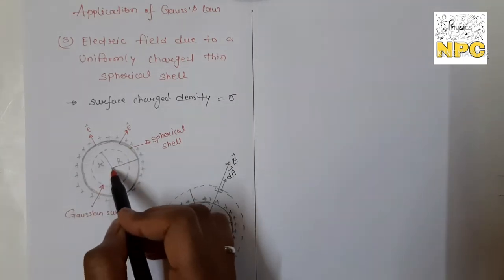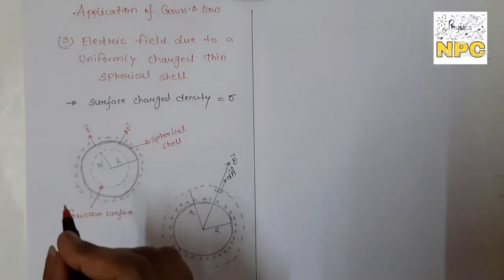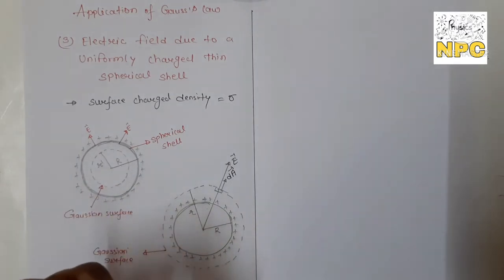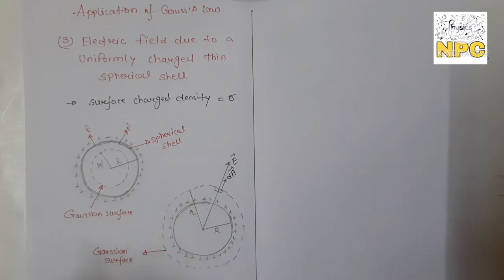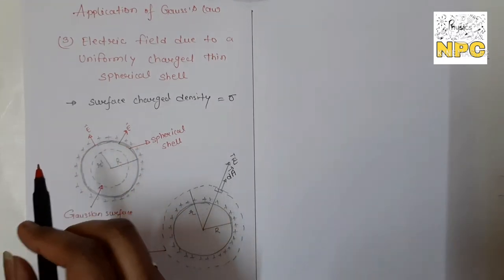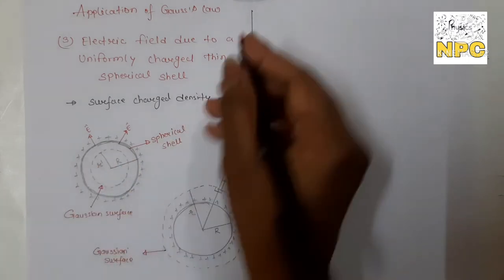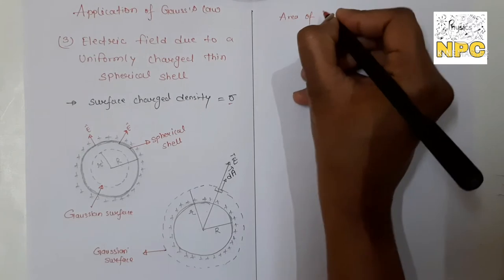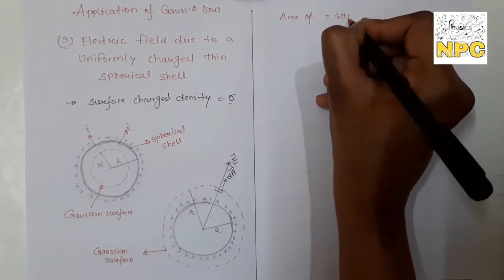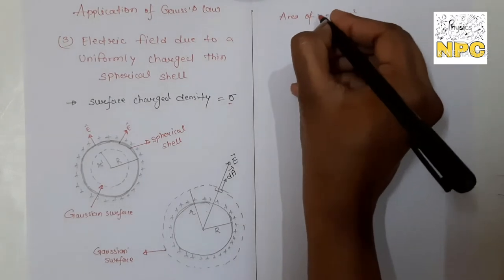The radius of this spherical shell is capital R. Now, if you talk about the surface area, the charge distribution is given by surface charge density sigma. If you talk about volume, you use volume charge density. The area of this spherical shell is 4πR², so the surface area is 4π into radius squared.